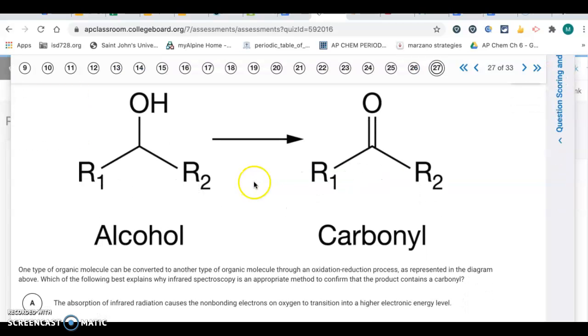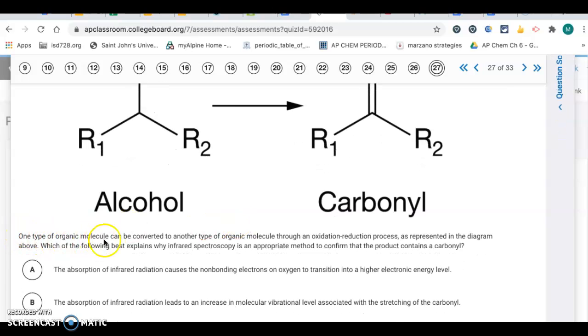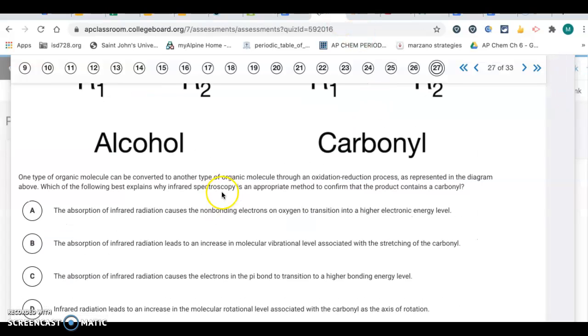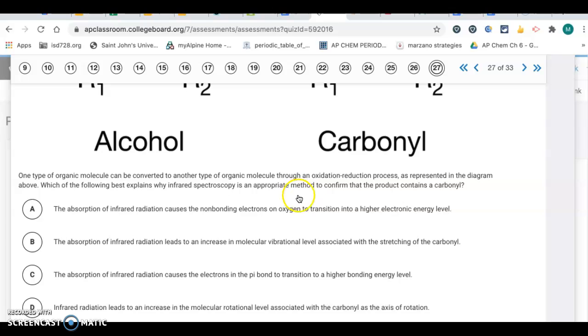Question 27. It has this alcohol and a carbonyl group. One type of organic molecule can be converted to another through an oxidation reduction process, as represented in the diagram above. Which of the following best explains why infrared spectroscopy is an appropriate method to confirm that the product contains a carbonyl? It's talking about infrared radiation. We go back to that section of notes, and infrared radiation deals with molecular vibrational levels. All that other stuff is irrelevant. We're just looking for vibrational levels.